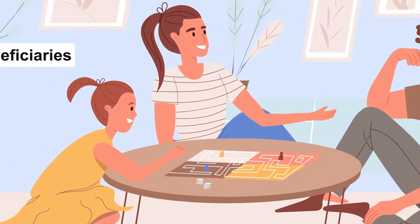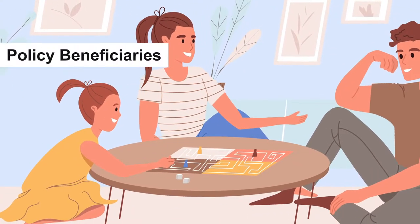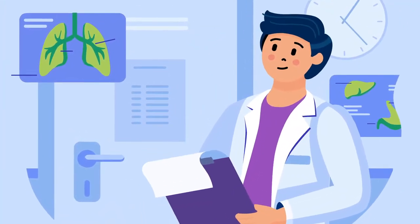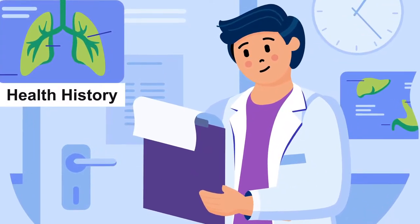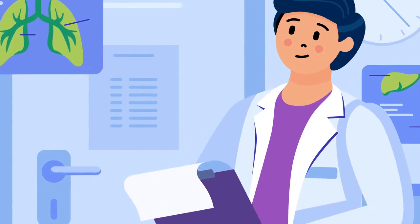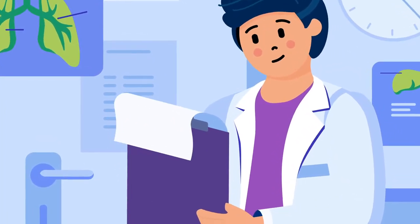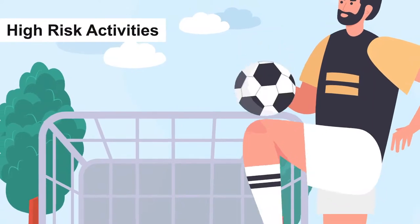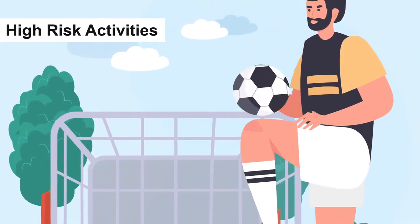Beneficiaries are most commonly the family of the policyholder, though a beneficiary can also be a company. The policyholder needs to be sincere about their past and current health conditions, or they may risk breaching the contract with the insurance company and the beneficiaries losing the right to the death benefit. Other activities that are considered high risk should also be disclosed.